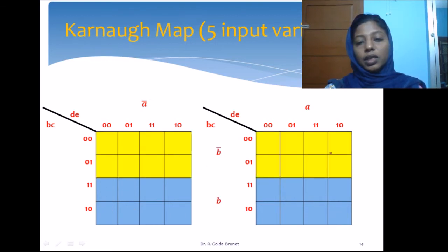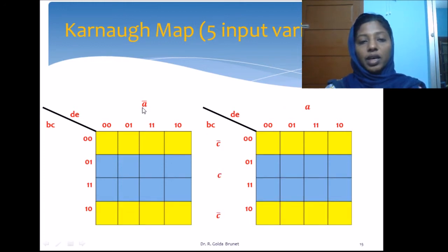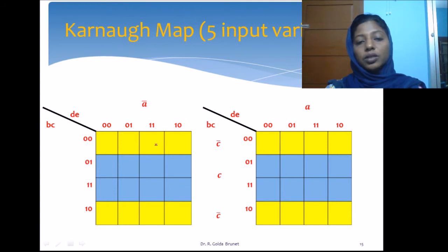The yellow cells — 16 cells — represent A-bar and the light blue block represents B. The entire 16 cells on the left represent A-bar and the 16 cells on the right represent A. We can wrap both maps vertically and horizontally. All yellow blocks are adjacent to each other and we can group them all together, giving us the block C-bar.